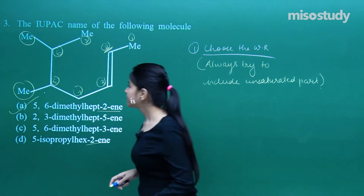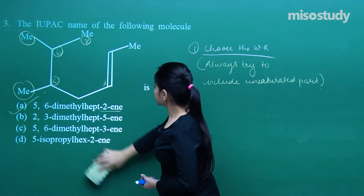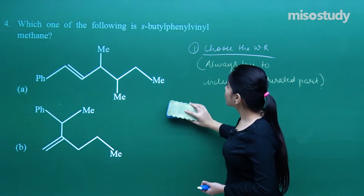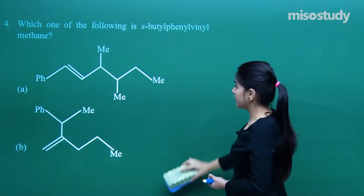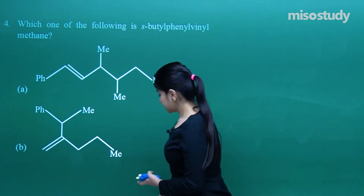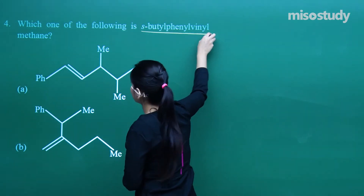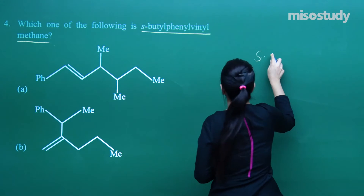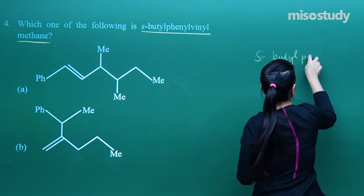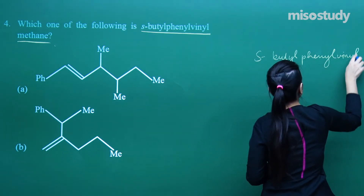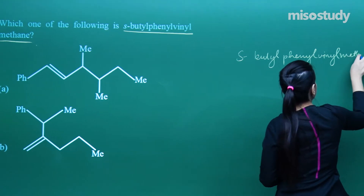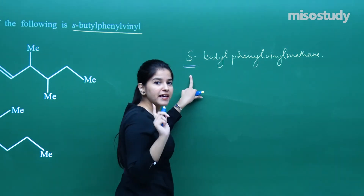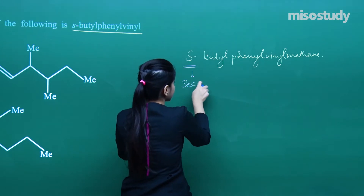I hope everybody has followed. So that is A as the answer. Now which one of the following molecules is s-butylphenylvinylmethane? Such a long question. If you try to analyze the name itself — s-butylphenylvinylmethane — 'S' stands for SEC, meaning they are telling us about the secondary butyl.